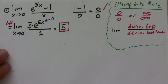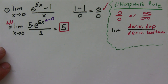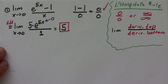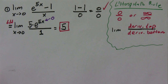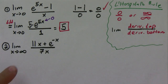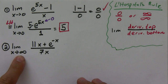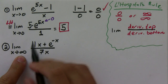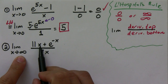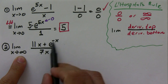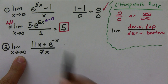And that's it — a very simple little trick. Now let's do another one. We have the limit as x goes to infinity of 11x plus e to the negative x, all over 7x.